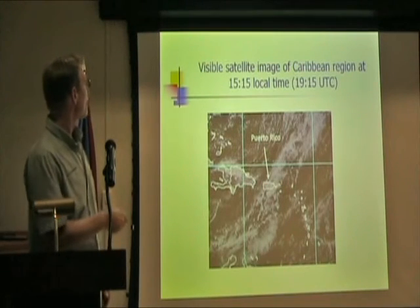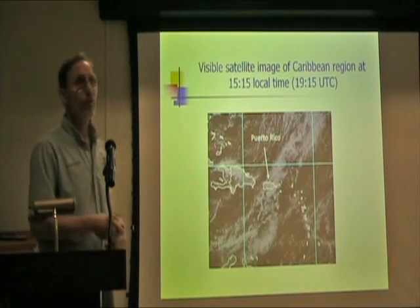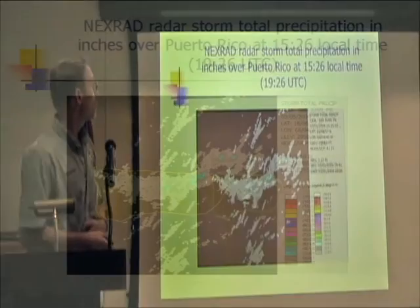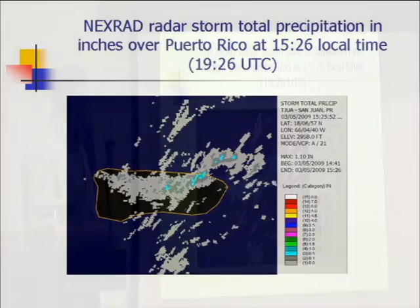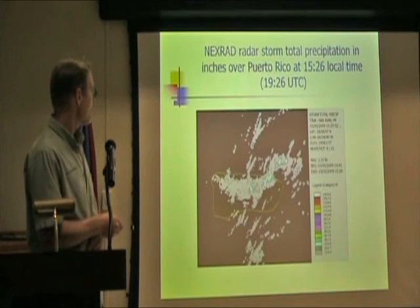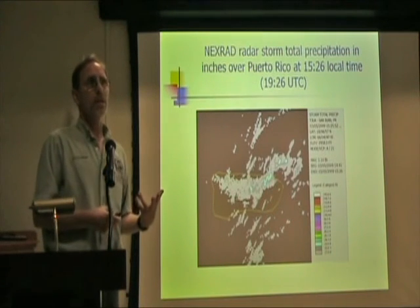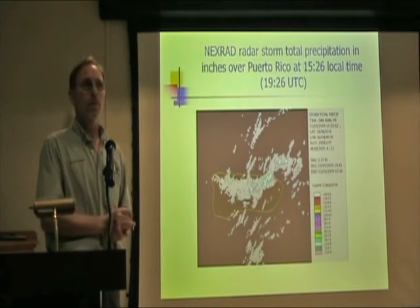You can see a cloud band running across the island, with some areas clearer. This is just a snapshot in time at about 3:15 in the afternoon. This is a NEXRAD radar result showing rainfall in inches — there was some rain in this part of the island and especially over San Juan. I specifically did not want to use a completely clear day because it would be very boring.